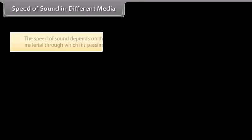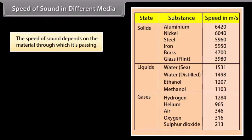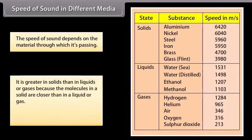Speed of sound in different media. The speed of sound depends on the material through which it is passing. It is greater in solids than in liquids or gases because the molecules in a solid are closer than in a liquid or gas. In this table you can find the speed of sound in different media at 25 degrees Celsius.